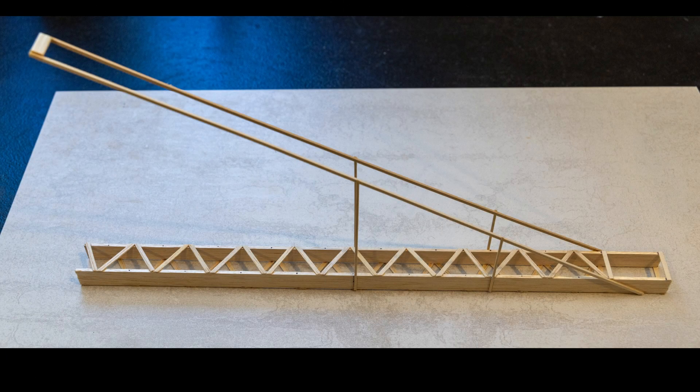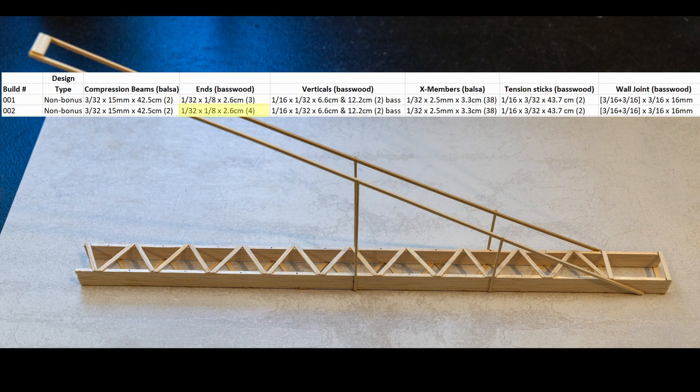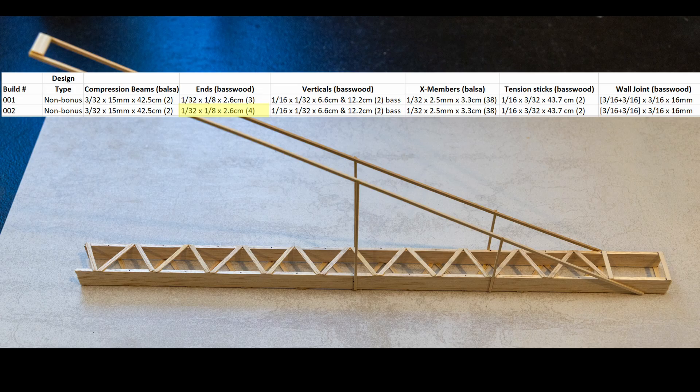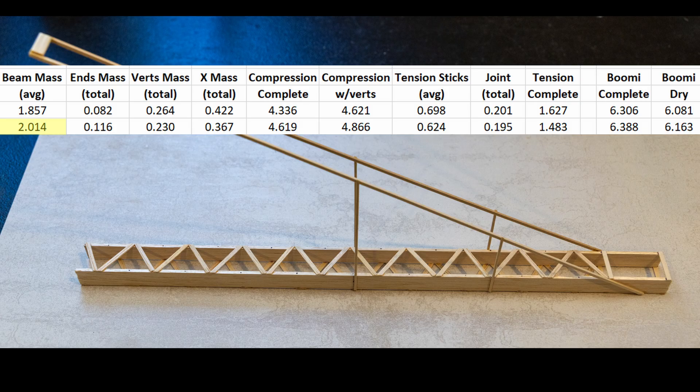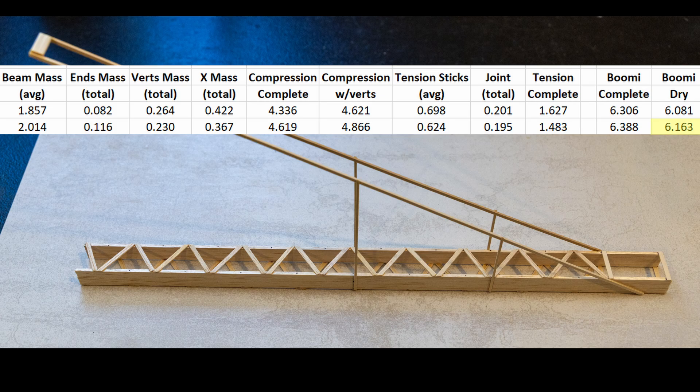Here is a picture of boomy number two. I'll highlight the changes from the previous build in my spreadsheet. The only design change was to add the fourth horizontal basswood end piece on the underside of the boomy. You can see that the average beam mass has increased from 1.857 grams to 2.014 grams to try and account for the failure we saw in the first test. The vertical pieces, the cross members, and the tension sticks have all been reduced slightly in mass to try and offset the gain from the beams. The final result was that the dry weight boomy for this build only increased by 0.08 grams.